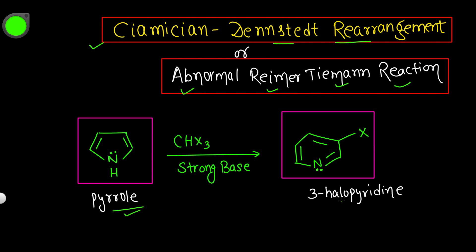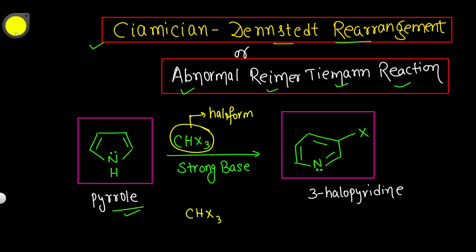Here is a general overview of this reaction. We have taken pyrrole as the substrate, and the reagent is a haloform, CHX₃, where X can be bromine, chlorine, or iodine. With a strong base, the product obtained is 3-halopyridine.